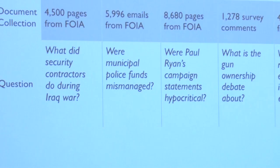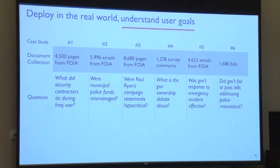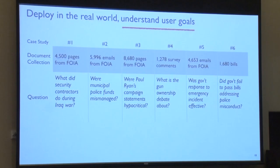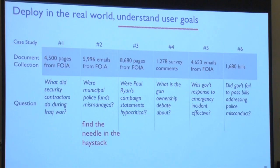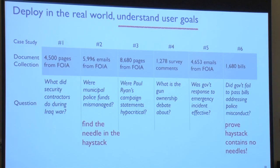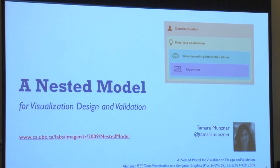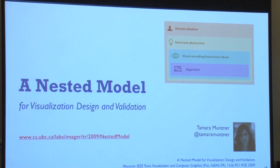We deployed this in the real world and our goal was to understand, given the questions people had, what were the underlying user goals. These goals actually ended up being a bit different from what we originally thought. We started from that first use case about the war logs, then found some people were using it to find the needle in the haystack — the smoking gun. In one particularly tricky case, which led to a 2014 Pulitzer Prize nomination, the task was actually trying to prove a haystack has no needles: did the government fail to pass bills on a particular topic?